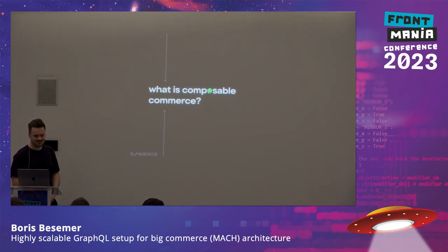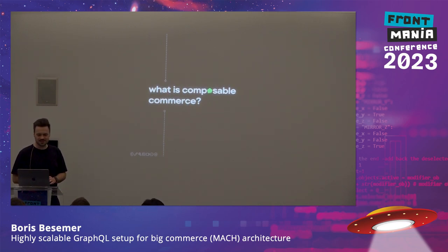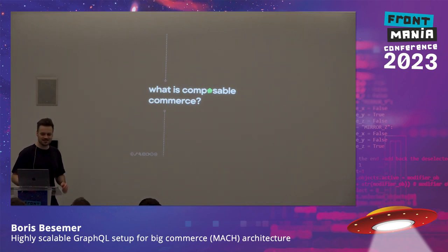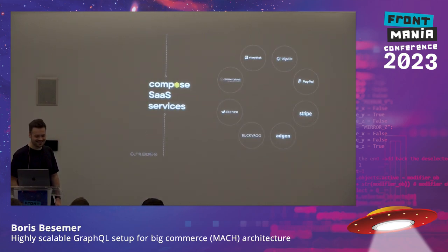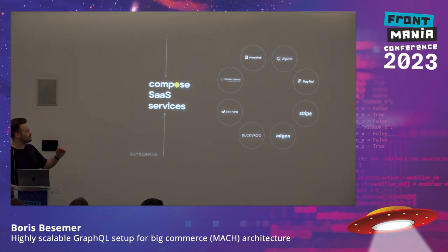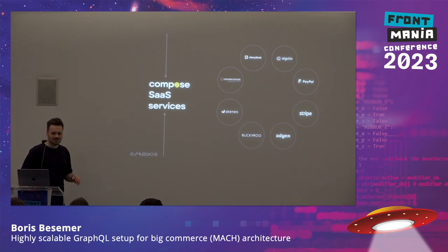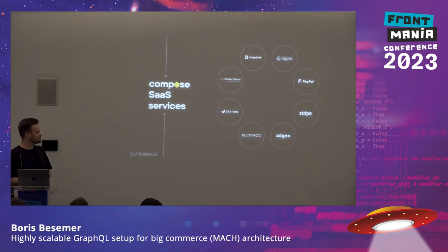Before I start talking about it, I'll first try to explain what composable commerce is. Composable commerce is actually e-commerce, but instead of building a completely own e-commerce webshop with something like Magento or some other solution, we actually use a lot of different SaaS services. You see in this example we have something like Commerce Tools, Aconeo, Stripe, PayPal, and various payment solutions, and we use a lot of these services to create one platform for our clients.